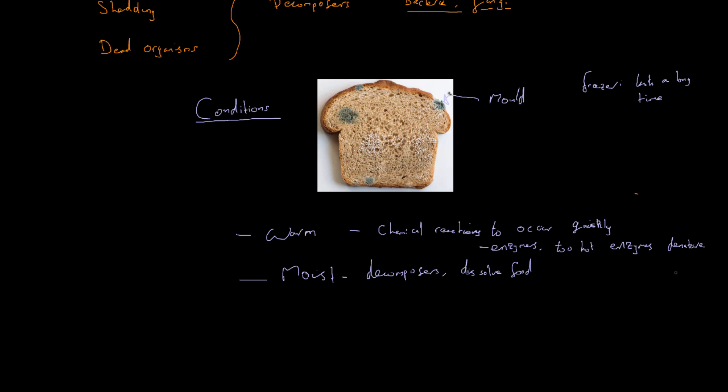And lastly, just like us, decomposers are organisms and they need to respire. Therefore we need a good level of oxygen in order for decay to occur effectively. So lots of oxygen allows respiration, and that is important for our decomposers because respiration provides them the energy to do their job. If they can't respire, then it's not going to happen.